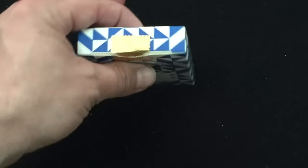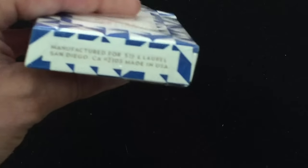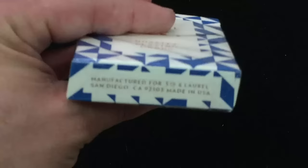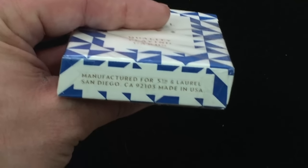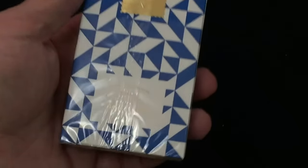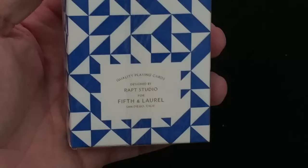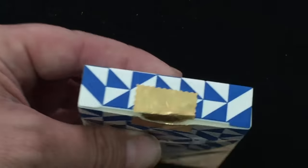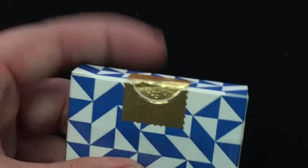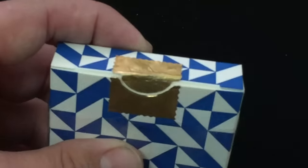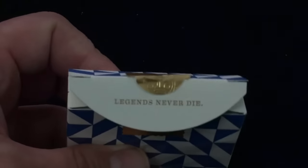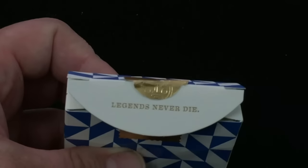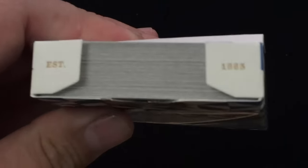You can see more of that on the sides and the top, the bottom in gold foil. Manufactured for Fifth and Laurel, San Diego, California. Then you get a custom embossed seal which has a sun with the logo in it, a stamp type seal in gold foil. It says legends never die, which is true, and here established 1965.